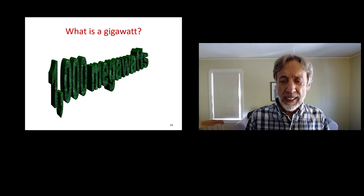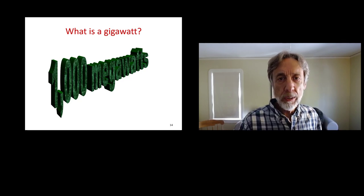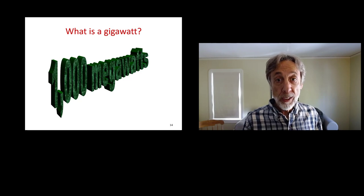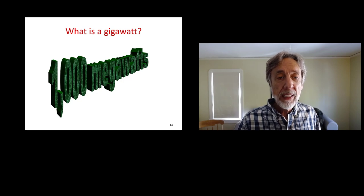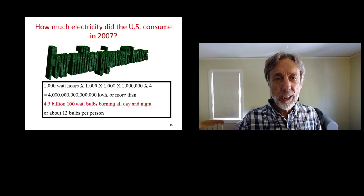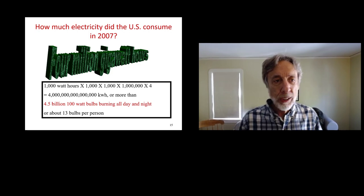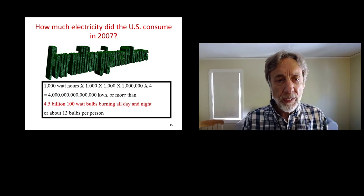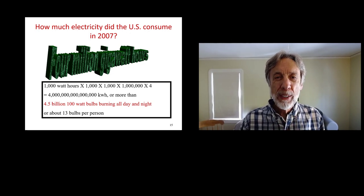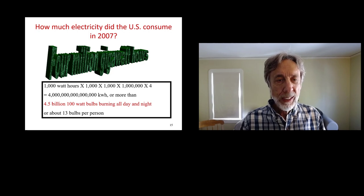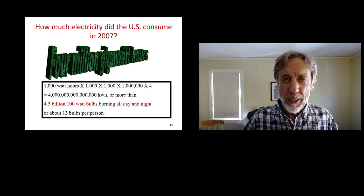We're going to be talking about megawatts and gigawatts a lot during the semester. A gigawatt is about the size of a fairly large power plant - either a nuclear power generating unit or a very large coal-fired plant, or maybe sometimes one that runs on natural gas. To give you an idea of how much power is consumed, these are figures from the United States back in 2007. Four million gigawatt hours of electricity were used in the United States over the course of 2007.